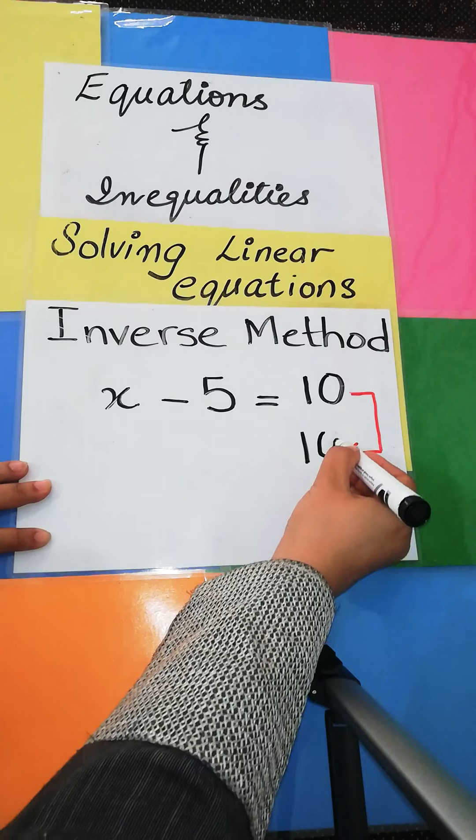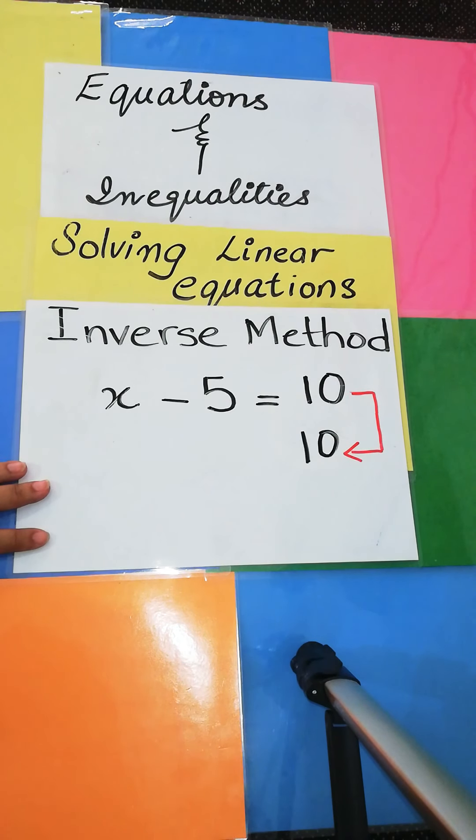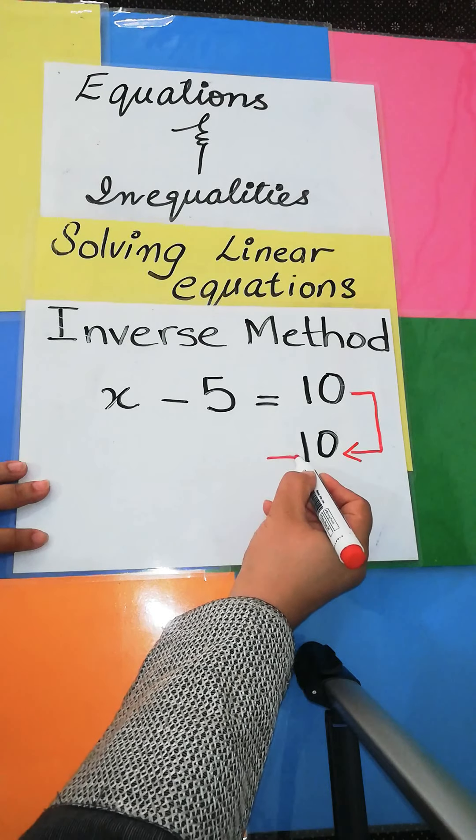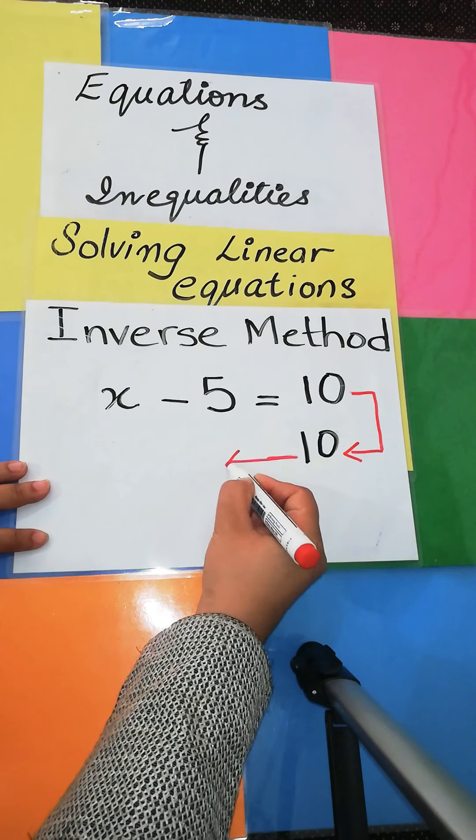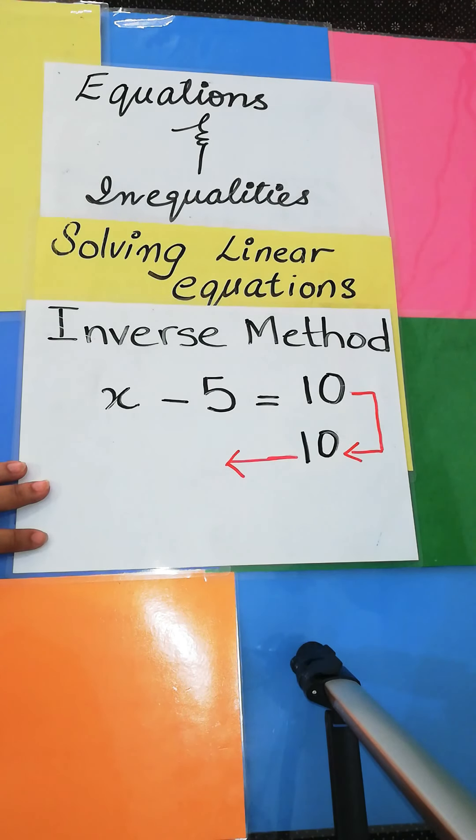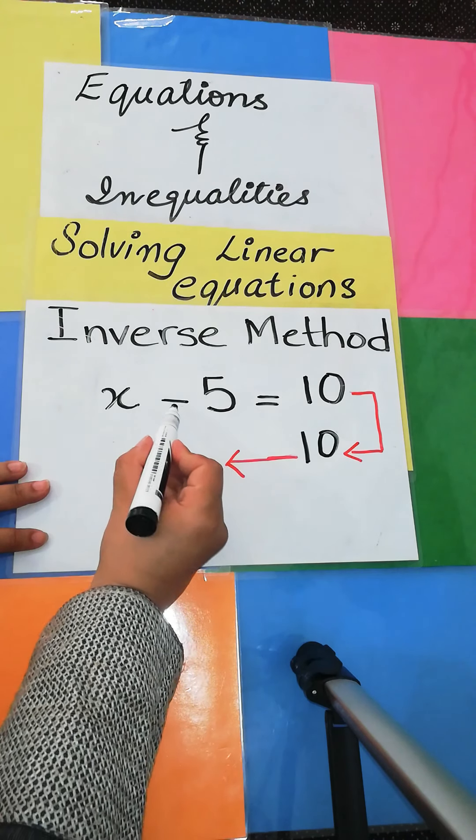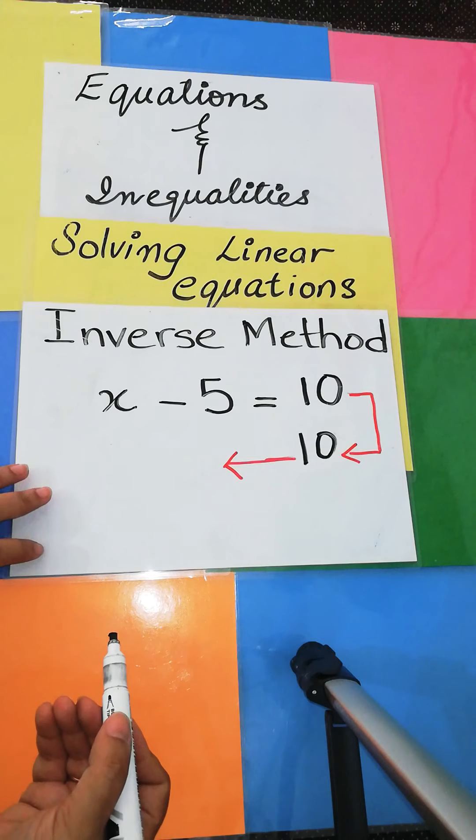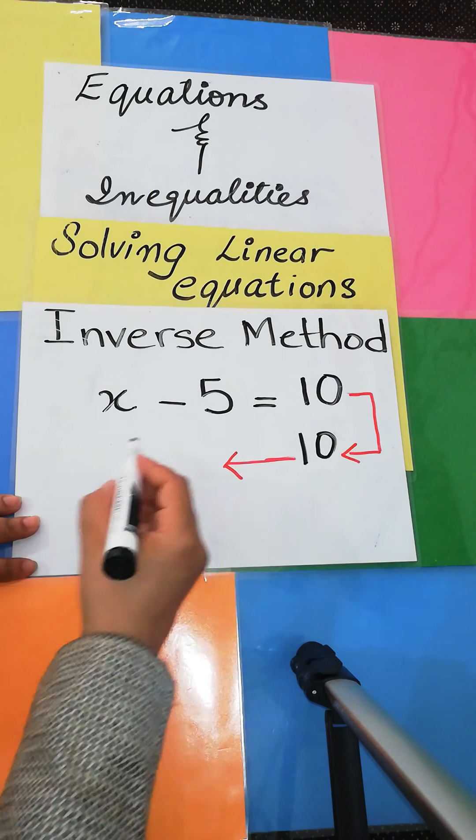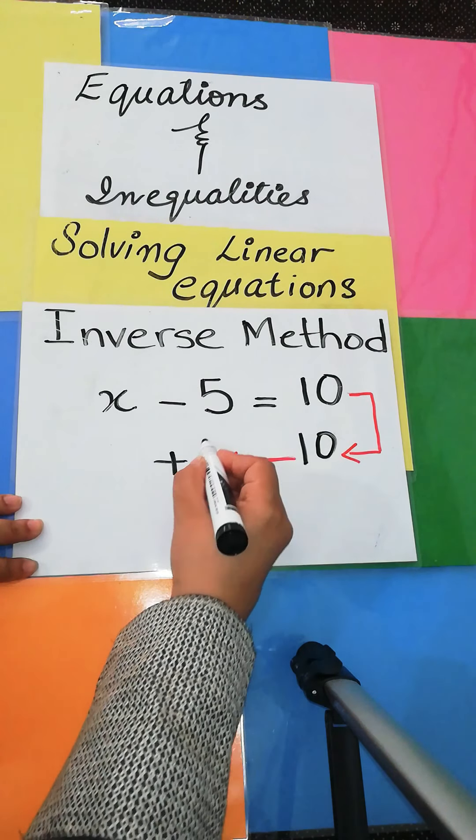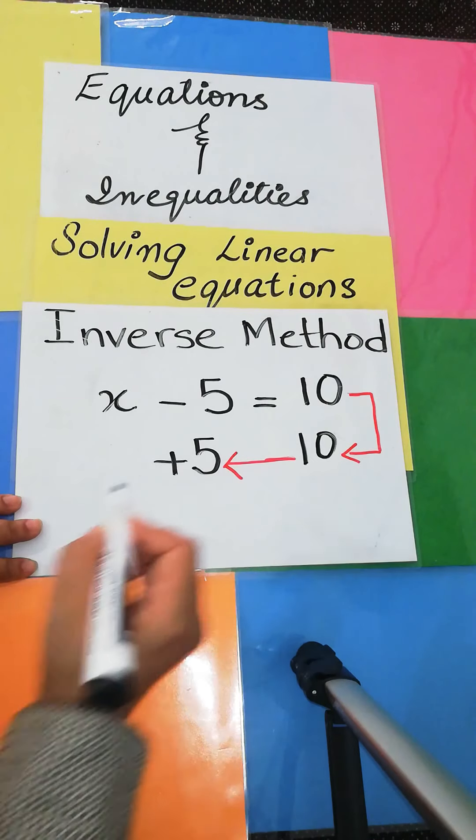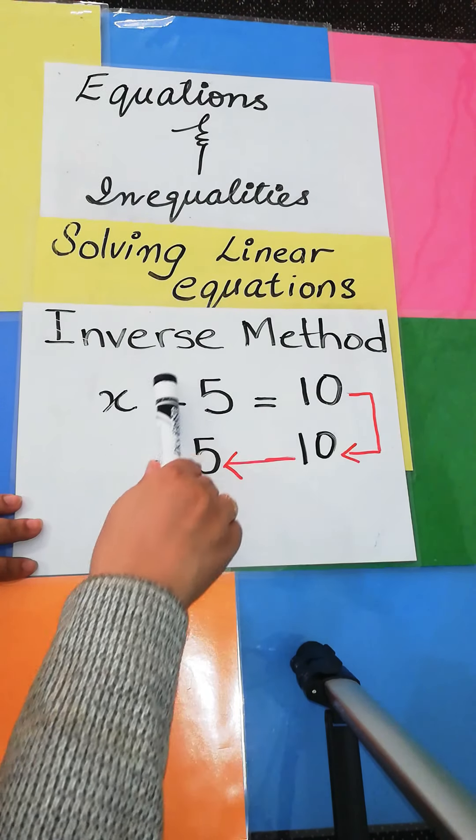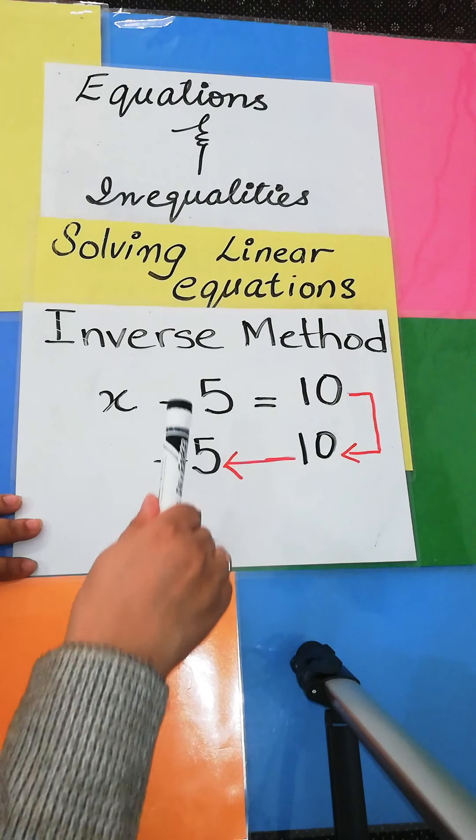I will be writing 10 as it is because it is on the right-hand side. Then I will again show this reverse inverse arrow, and when I'm going to write this minus 5, what is the inverse of minus 5? The inverse of minus 5 is plus 5.